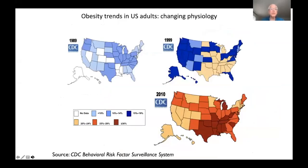I want to focus first on obesity. This slide looks at obesity trends in U.S. adults — a kind of changing physiology — using data from the CDC. This slide shows three maps of the United States from 1989 to 2010. In 1989, there is no state where more than 14% of adults are obese. By 2010, there is no state with less than 20% obesity, and the national average exceeded 30%. What's significant is that it's happening everywhere, all over the country, and the difference between the first map and the last map is only 21 years. Something very powerful must be going on.